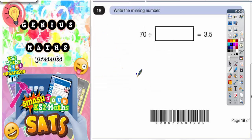Question 18. It's pretty obvious what they're asking us to actually do here, and that's to find the missing number, so that 70 divided by the missing number equals 3.5. But it's not so obvious about how we're actually going to do that.